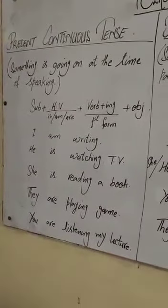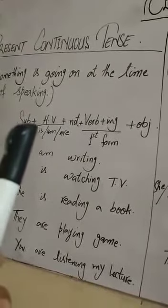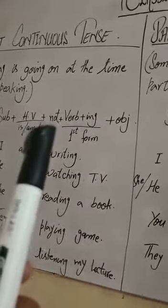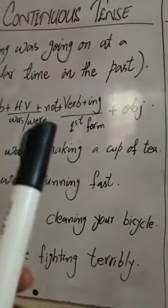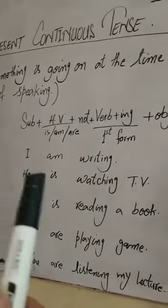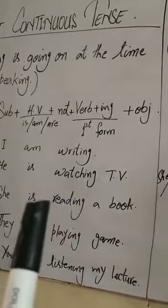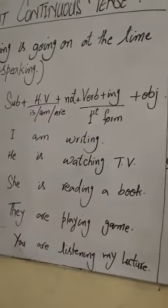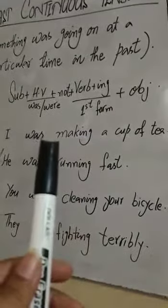تو یہ تھے تینوں tenses۔ اب ایک اور کام جو ہم نے کرنا ہے وہ ہے ان کو negative اور interrogative میں change کرنا — جو کہ بہت simple ہے۔ Negative بنانے کے لیے: subject plus helping verb plus not — یعنی helping verb کے فوراً بعد not کا use کریں گے اور ہمارا sentence negative میں change ہو جائے گا۔ یہ rule present، past اور future تینوں میں same ہے۔ I am writing کو negative کریں گے: I am not writing۔